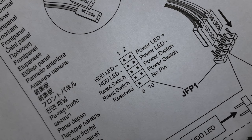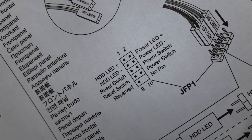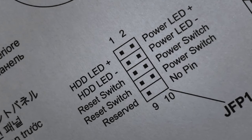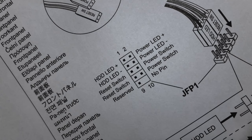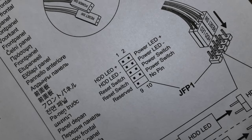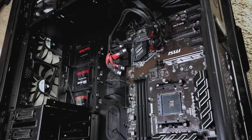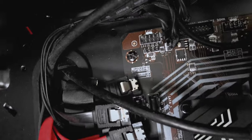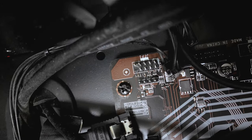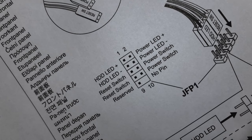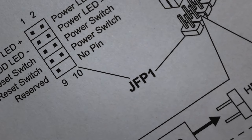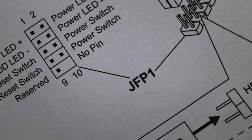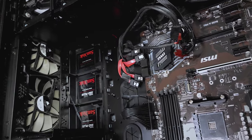These front panel connectors haven't been standardized into a single harness, so we have to go into our manual. Find the section that shows a diagram describing which pin attaches to which case wire. Look on the motherboard for the pin header labeled JFP1 — it matches what's in the manual. About 90% of motherboards will have five pins on one side and four pins on the other, which helps confirm you're in the right spot.